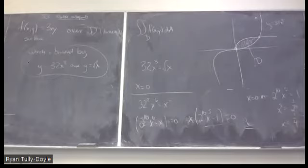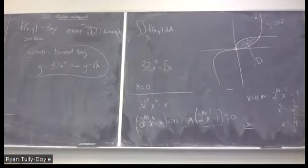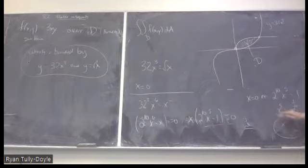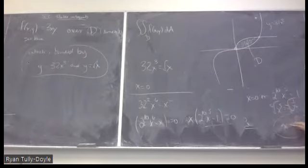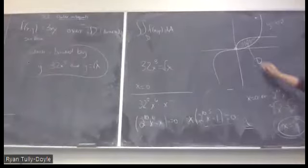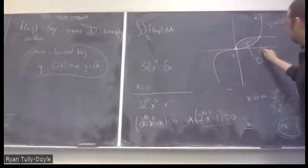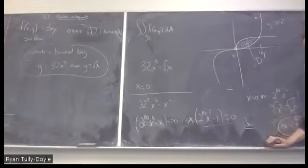Taking the fifth root of both sides — that's multiplying by the one-fifth power — gives x = 1/4. So the intersection points are at x = 0 and x = 1/4. We're ready to set the integral up.